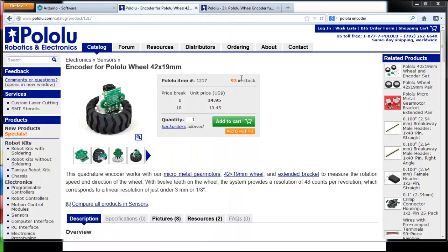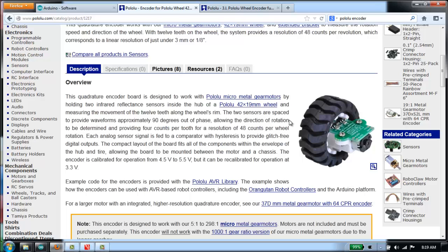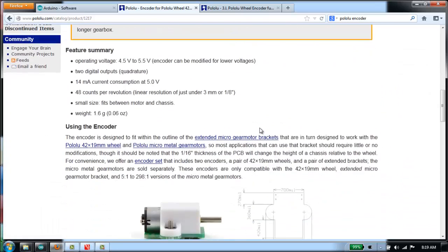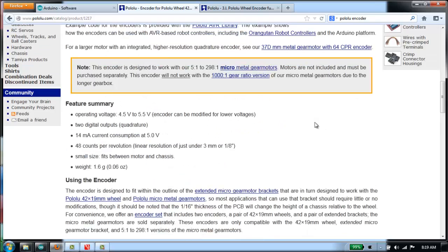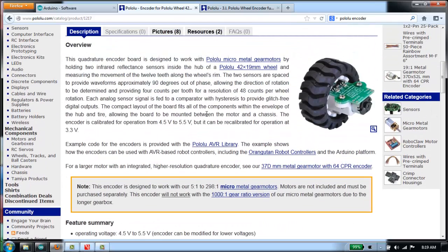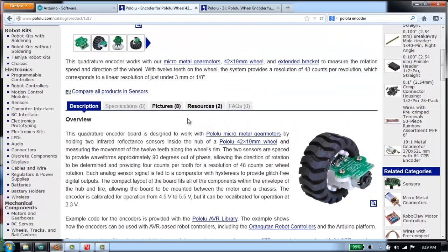This page here from Pololu has lots of information about how these encoders work. In particular, it has a drawing down here of the exact dimensions of the encoder, which could be very useful if you're trying to find a way to mount this thing. I'm going to do a little demo here using some of the software that we've used for other projects in class and show you how these encoders really work.